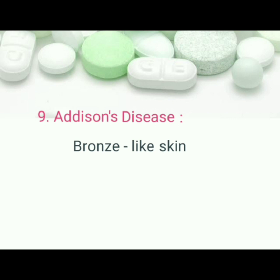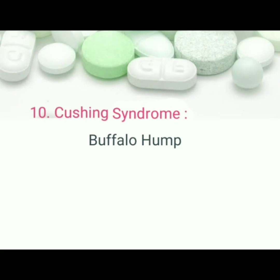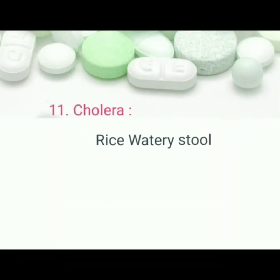Addison's disease: pathognomonic sign is bronze-like skin. Cushing's syndrome: pathognomonic signs are beefy red tongue and buffalo hump.